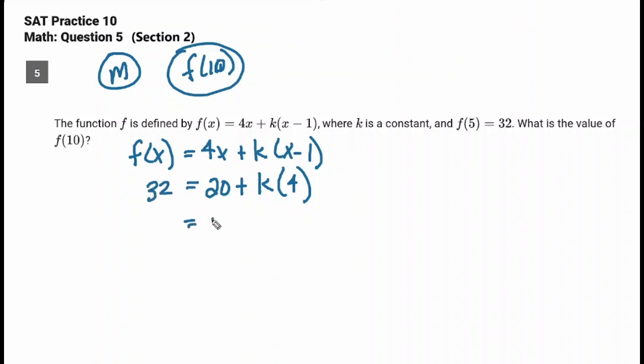So we've got simple algebra here: 20 plus 4k equals 32. We're going to move the 20 across, it's going to change signs. 12 equals 4k, and divide both sides by 4. So what's k? k is 3.